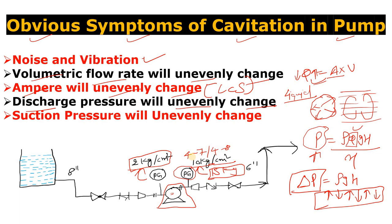If you have a doubt about cavitation and need to check it in the field, you must check all five symptoms: first, noise and vibration; second, volumetric flow rate; third, ampere; and fourth and fifth, discharge and suction pressure. Please let me know in the comments what prevention steps you would take if cavitation is occurring in a centrifugal pump. That's all for today's video — thanks for watching, keep learning.